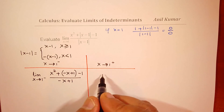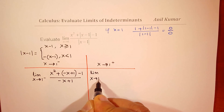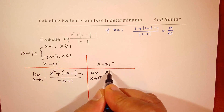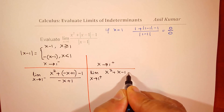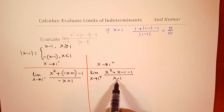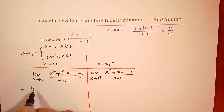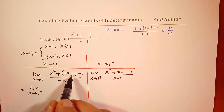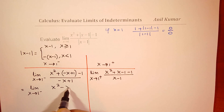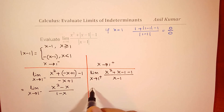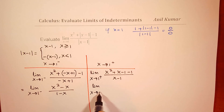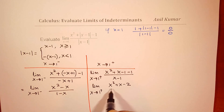On the right side, we find the limit when x approaches 1 from the right, and the expression becomes x squared plus (x minus 1) minus 1, over (x minus 1), maintaining the positive value. Simplifying the left-hand limit: plus 1 minus 1 is 0, so we get x squared minus x in the numerator and (1 minus x) in the denominator. For the right-hand limit: minus 1 minus 1 is minus 2, so we get x squared plus x minus 2 in the numerator and (x minus 1) in the denominator.